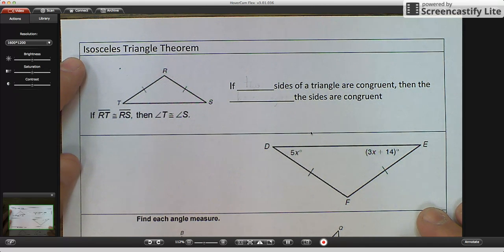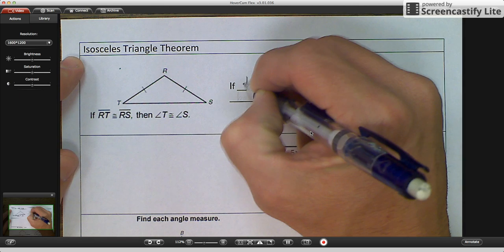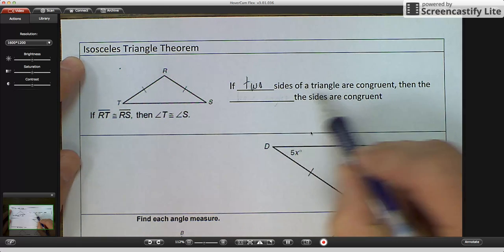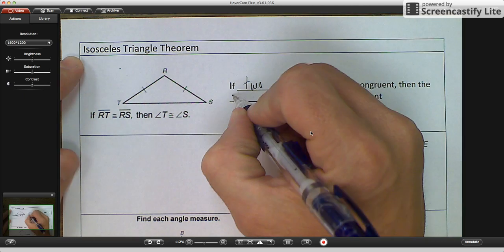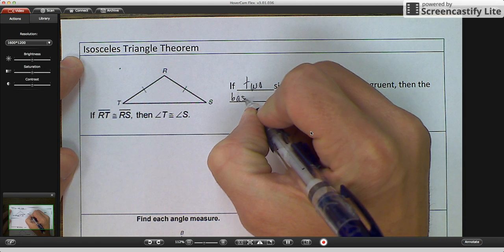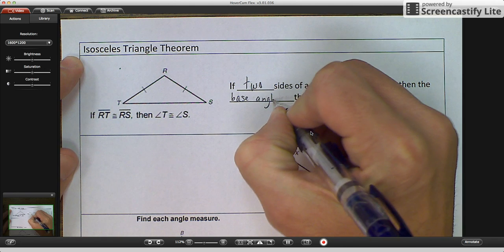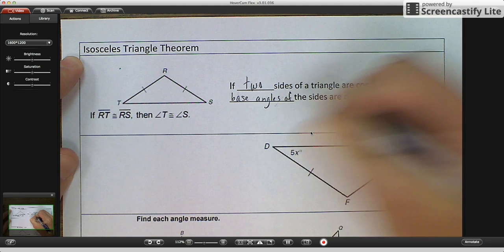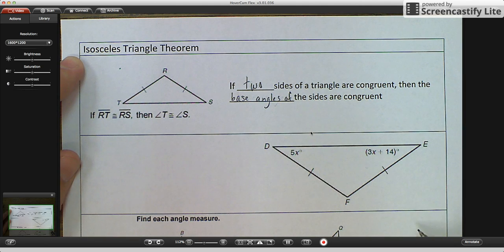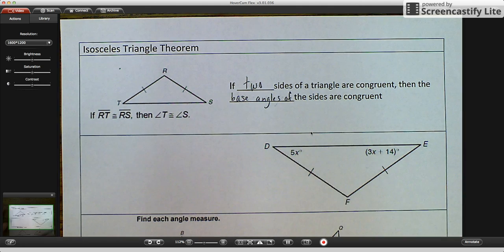So the isosceles triangle theorem says if two sides of a triangle are congruent, then the base angles of the sides are congruent. So we need to know which ones are the base angles.